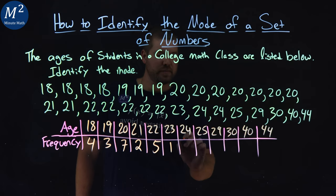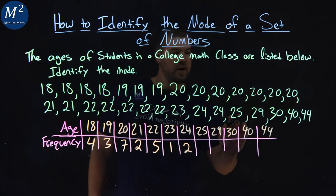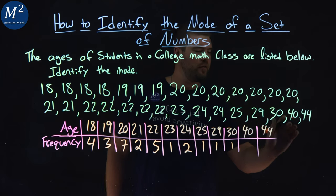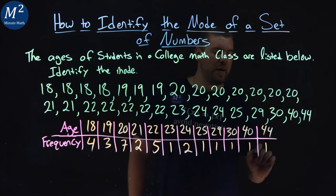1. 24: 1, 2. 25 is a 1. 29, I see 1. 30: 1. 40: 1. And 44 happens one time.